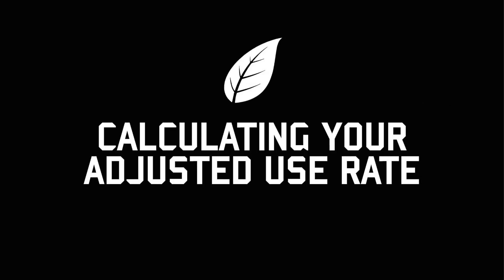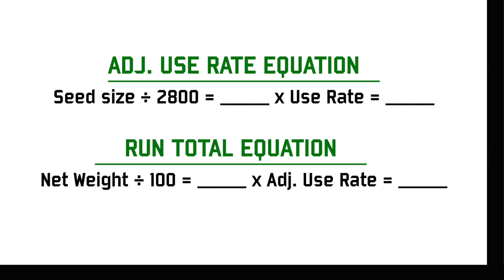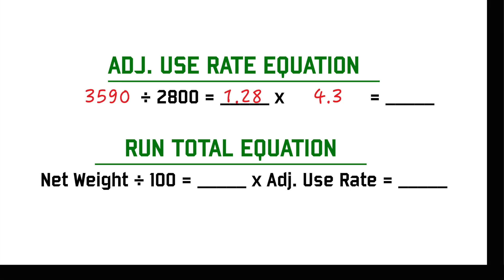Because seed size varies from lot to lot, you will need to determine an adjusted use rate. To do so, divide your seed size by 2,800, then multiply your answer by your use rate. This final number equals your adjusted use rate.